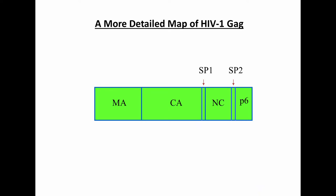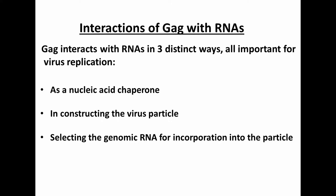The cleavage pattern of HIV-GAG is more complex than the generic version. There are two cleavages, not one, between capsid and nucleocapsid, resulting in the release of a 14-residue spacer, SP1. What I want to tell you today is about three different ways that GAG interacts with RNAs. All these ways are important for virus replication: GAG is a nucleic acid chaperone; it depends on RNA in constructing the virus particle; and it must select the genomic RNA for incorporation into the particle, despite the fact that RNA is swimming in a sea of cellular RNAs.